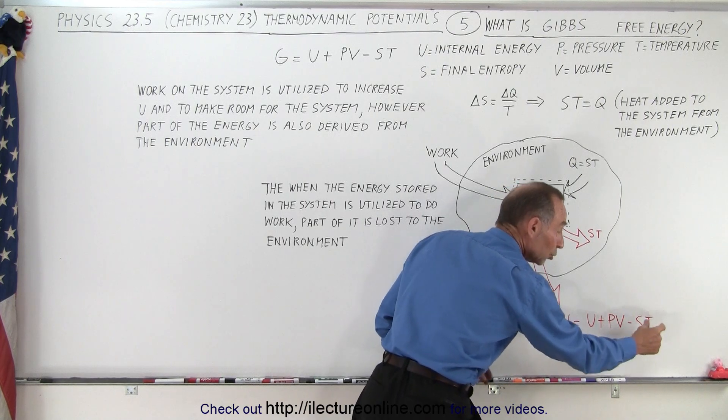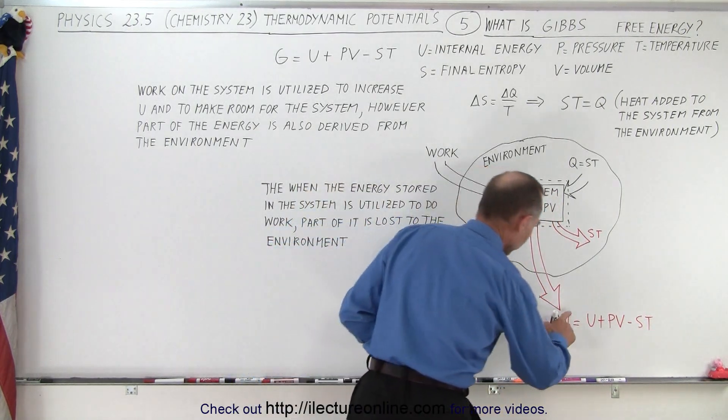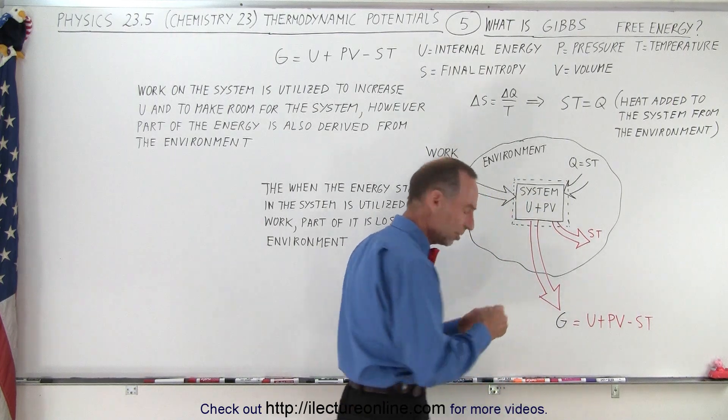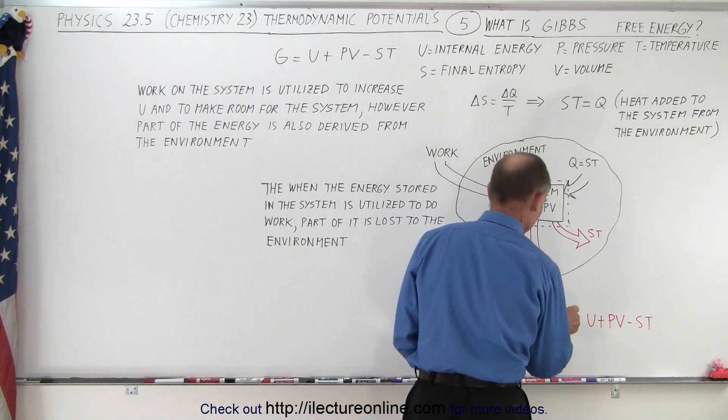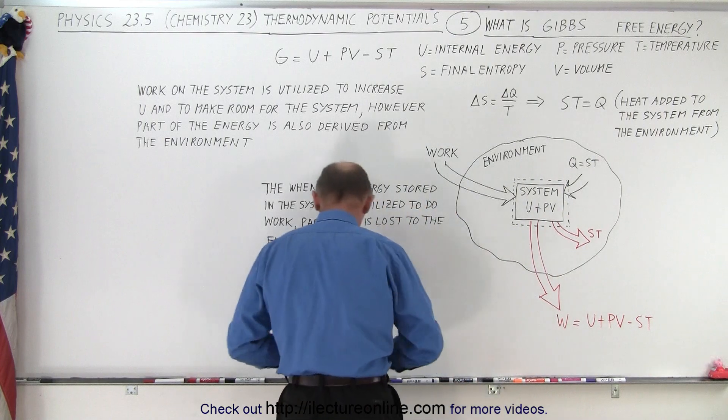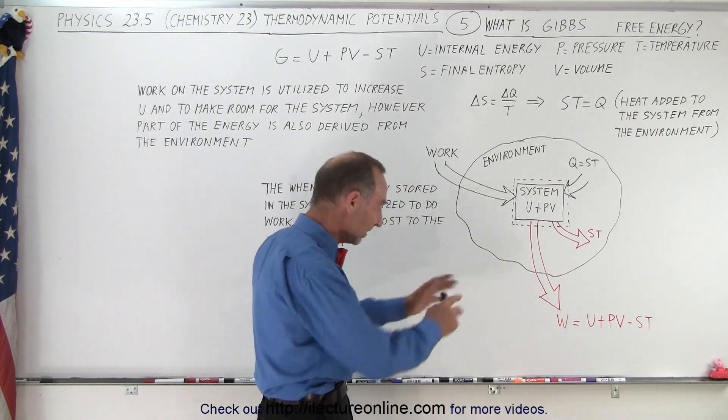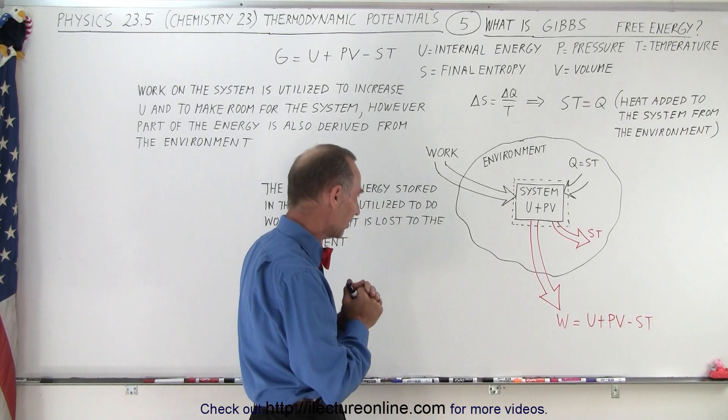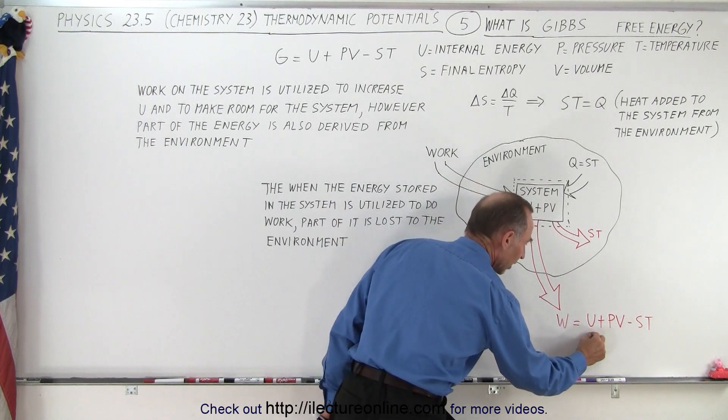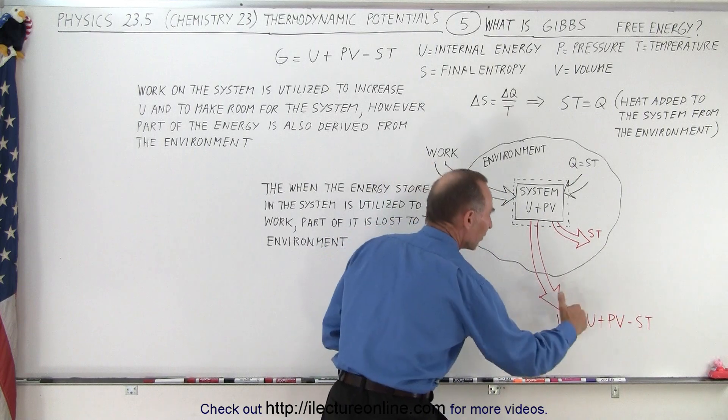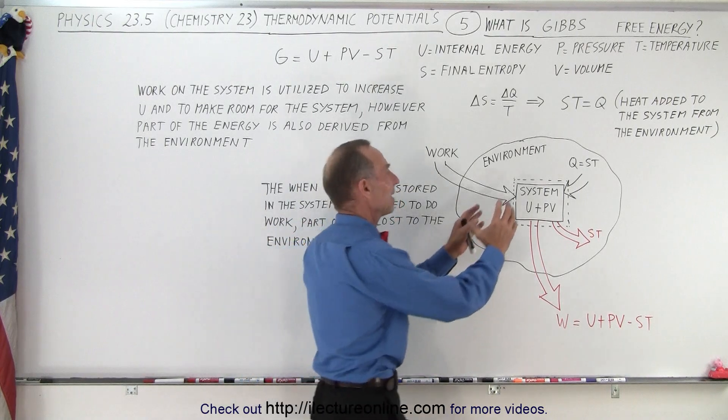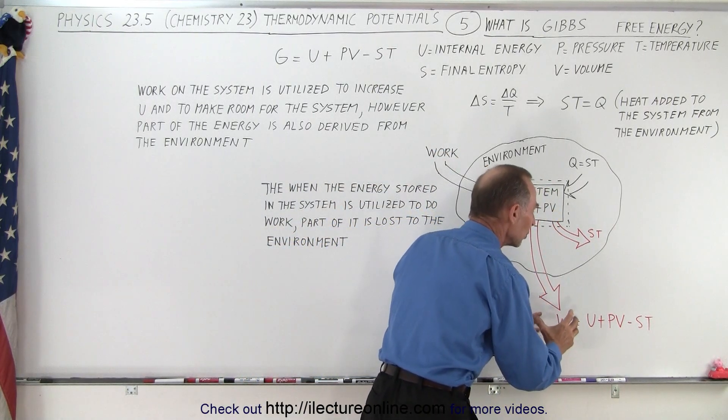It's the total amount of energy available from internal energy plus the energy stored in the expansion of the volume. We take all that energy, we subtract from that the energy lost to the environment. The amount of work that can be done is not equal to the total internal energy plus the energy stored in the expansion of the system; some of it is lost and is absorbed by the environment. So the amount of work that we can do is actually less than the available energy.